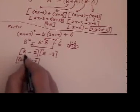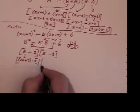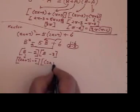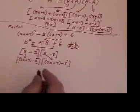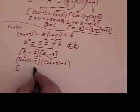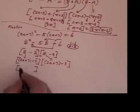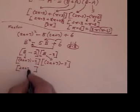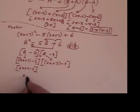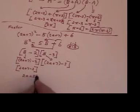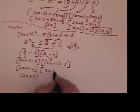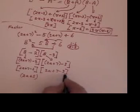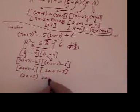So instead of B, I've written 2A plus 7. And over here I'll write 2A plus 7 right there. Now I'll simplify these square brackets. It's 2A plus 7 minus 2 is 2A plus 5. And here 2A plus 7 minus 3 is 2A plus 4.